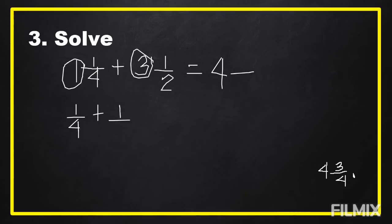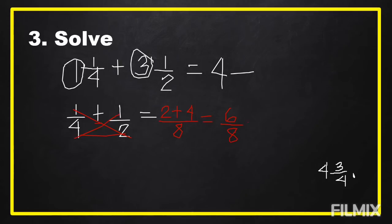We're going to use the cross-product method. Multiply one times two, the answer is two. Since our operation is addition, we put plus. Then four times one equals four, over four times two which equals eight. Then two plus four equals six over eight. We're going to reduce this to lowest terms by finding the GCF of six and eight, which equals two.